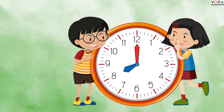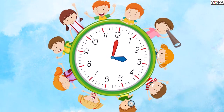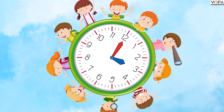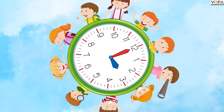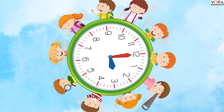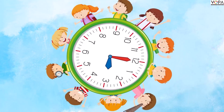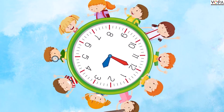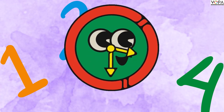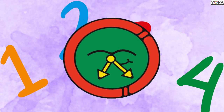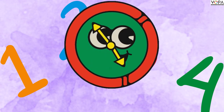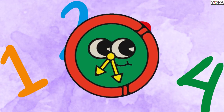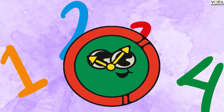When the long hand points to the top, the short hand points to the hour. This is how we read the clock and this is how we know what time it is.